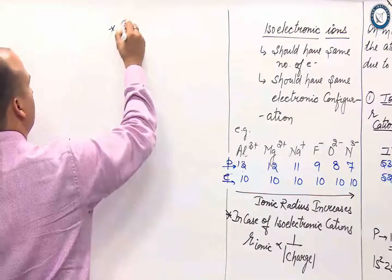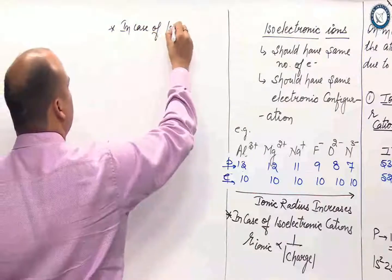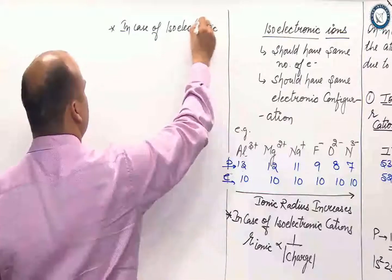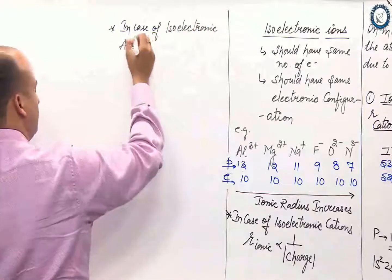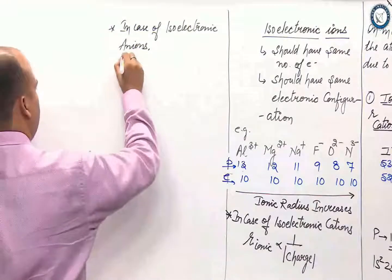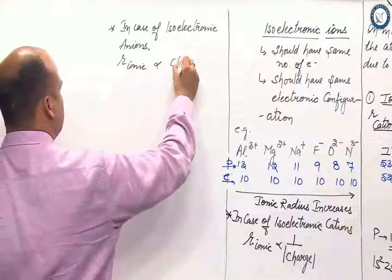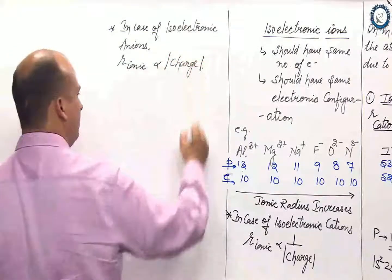In case of isoelectronic anions, the ionic radius is directly proportional to charge.